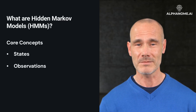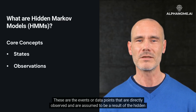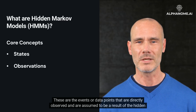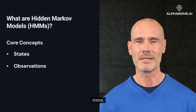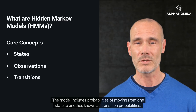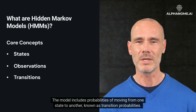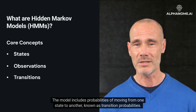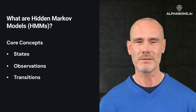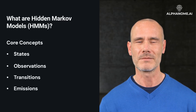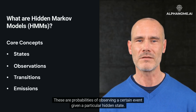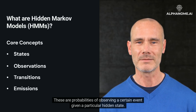Observations: These are the events or data points that are directly observed and are assumed to be a result of the hidden states. Transitions: The model includes probabilities of moving from one state to another, known as transition probabilities. Emissions: These are probabilities of observing a certain event given a particular hidden state.